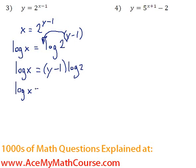So here we have log x equals, now I need to distribute the log 2, y times log 2, y log 2, and minus 1 times log 2, or negative 1 times log 2 is negative log 2.